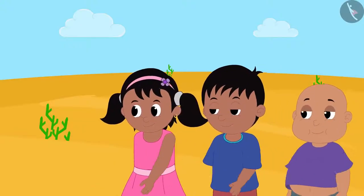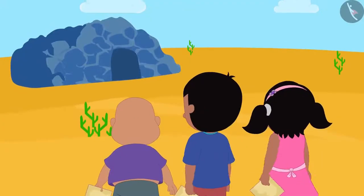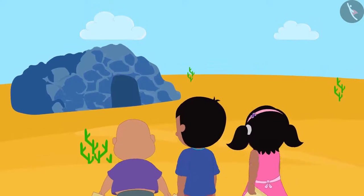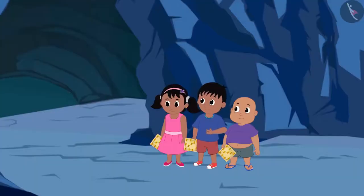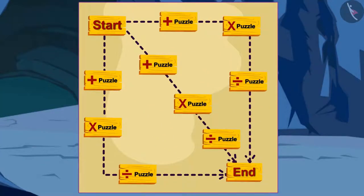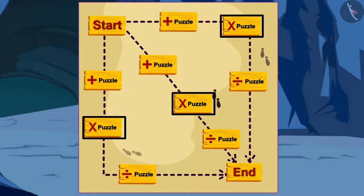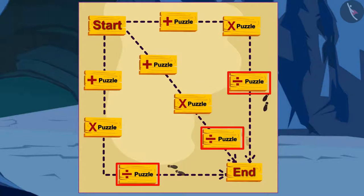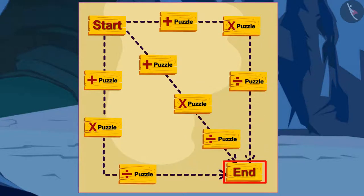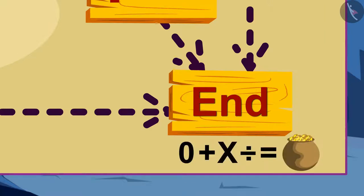Raju, Bablu and Pinky are out in search of treasure. All three have this kind of a map and this message. You will all start from zero. You will have to do the math according to the symbols you see on the way. By doing the math along the way, you will reach the end of the map. You will get as many gold coins as your answer when you reach the end.